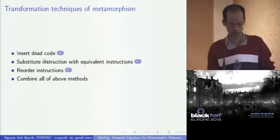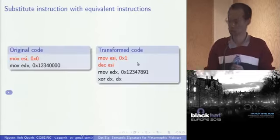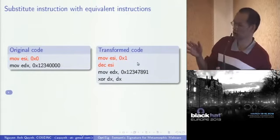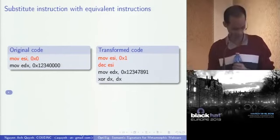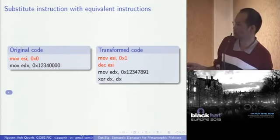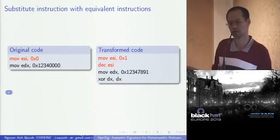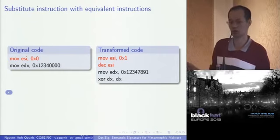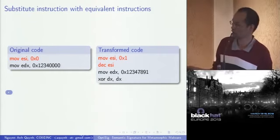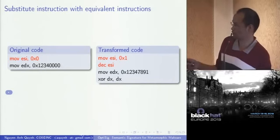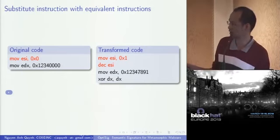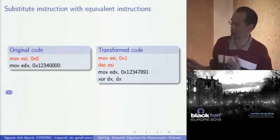The second transformation method is substitute instruction with equivalent instruction. For example, the malware substitutes 'move 0 to ESI' with 'move 1 to ESI' followed by a decrement, achieving the same result but looking very different. Similarly, 'move 01234 00 to EDX' can be replaced by 'copy 01234 something to EDX' and then XOR DX DX to zero the last two bytes. Both do exactly the same thing but look completely different syntactically.